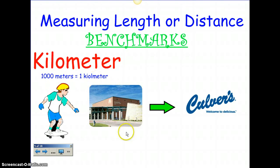If you're measuring length or distance and you want to do kilometers, one thousand meters is one kilometer. To do a kilometer, it's about walking from our school to Culver's. That would be a kilometer — a distance that you're going to have to walk and take some time to do. So if you're measuring something in kilometers, you have to know that it's something that's really long.